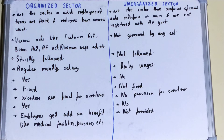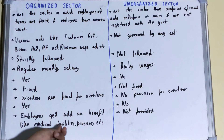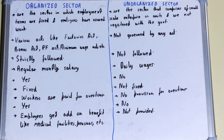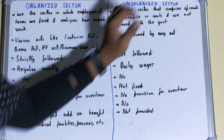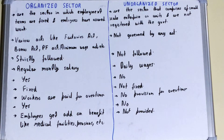If we talk about benefits and add-ons, in the organized sector employees get additional benefits like medical facilities, pensions, and more, which are very helpful because besides salary they receive extra benefits that ensure workers stay happy. But in the unorganized sector, no such benefits are provided. This was all about the difference between organized sector and unorganized sector.